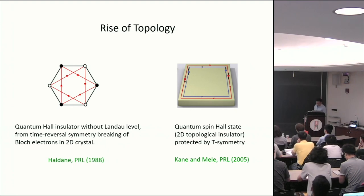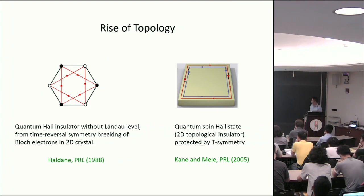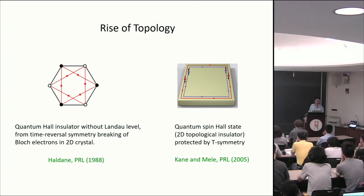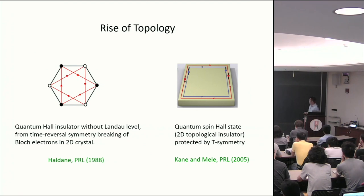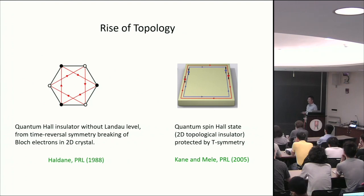Then in 2004-2005, Kane and Mele introduced another type of theoretically new terms to graphene. They were actually inspired by the experimental discovery of graphene, thinking about what can be done. They introduced a spin-orbit term that leads to a new class of topological states, now known as topological insulators. The two-dimensional version is also known as the quantum spin Hall state — a state protected by time-reversal symmetry. These two are the topological states that theorists came up with in the context of graphene.